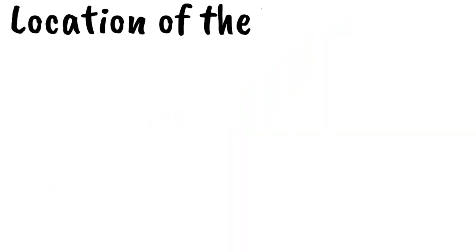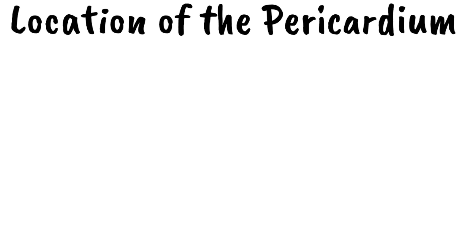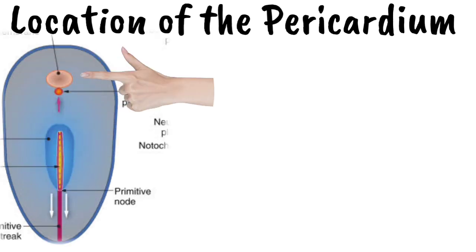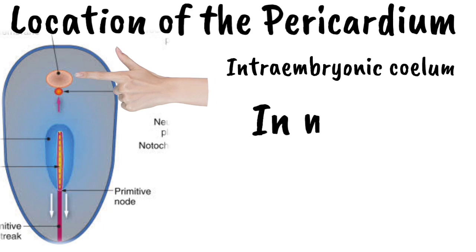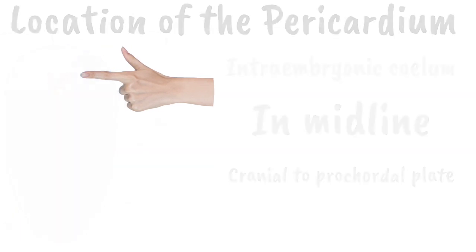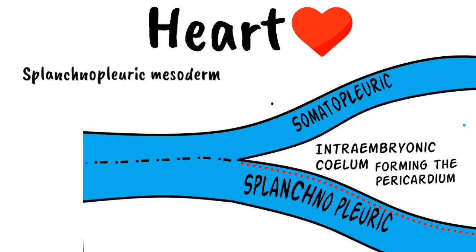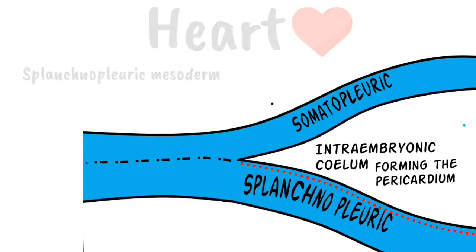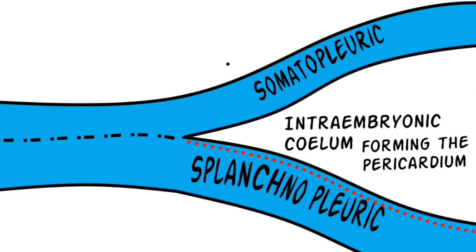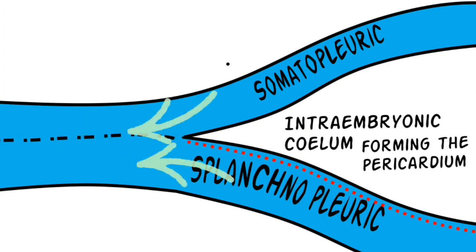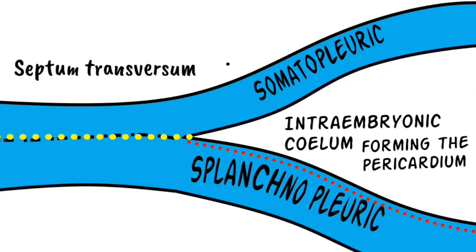The pericardial cavity is formed from the part of the intraembryonic coelom lying in the midline just cranial to the prochordal plate. The heart is formed from the splanchnopleuric mesoderm forming the floor of the pericardial cavity. Cranial to the heart tube, the splanchnopleuric and somatopleuric mesoderms are continuous with each other, forming an area called the septum transversum, which forms the future diaphragm.